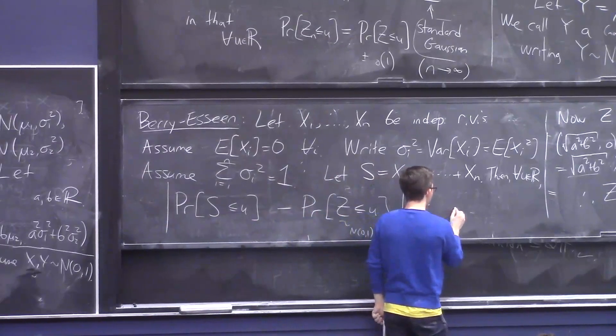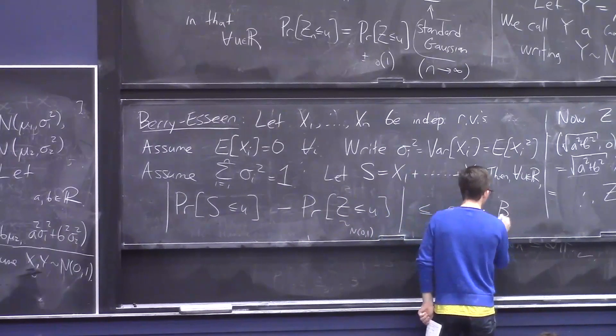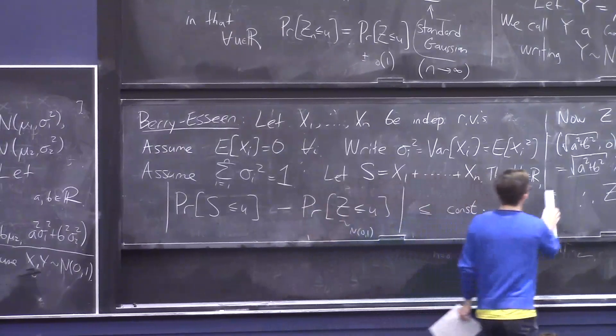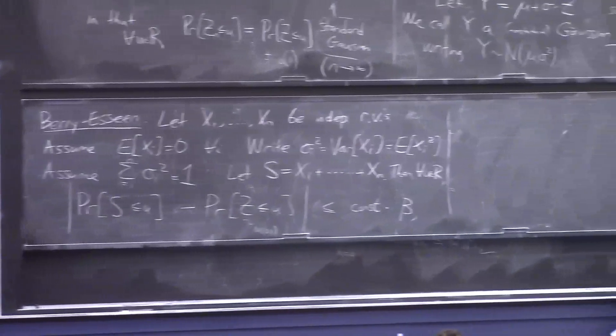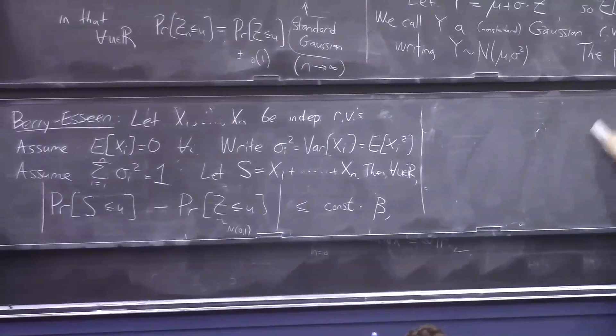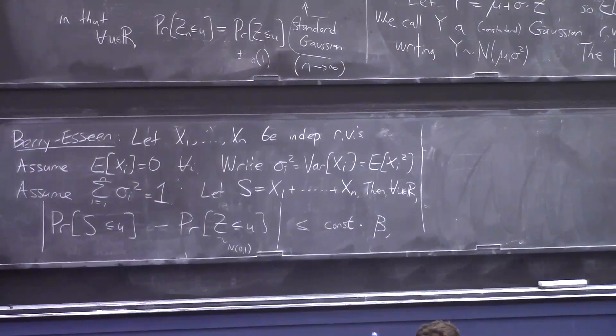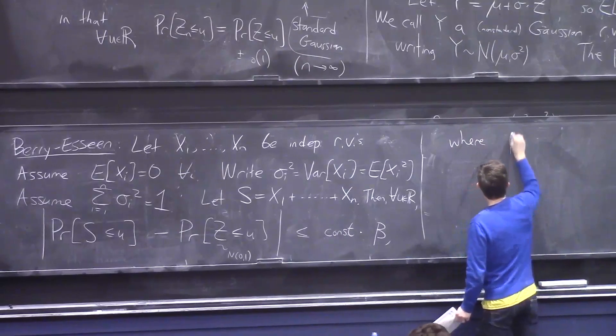Let me now say what the error expression is. It's at most some constant times β. So, I said, this is looking a little bit funny, but we'll talk about it. Where β is going to be an expression where you'll be like, is that supposed to be small? I don't even know. But we'll see it's usually small.